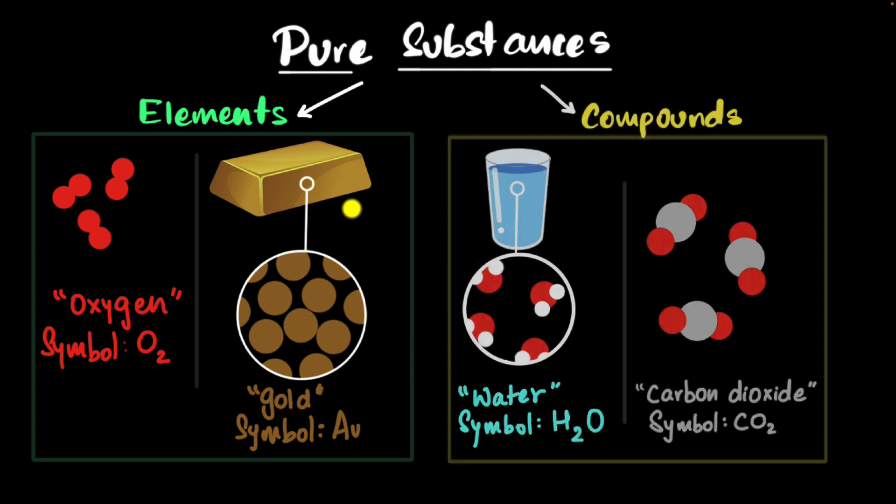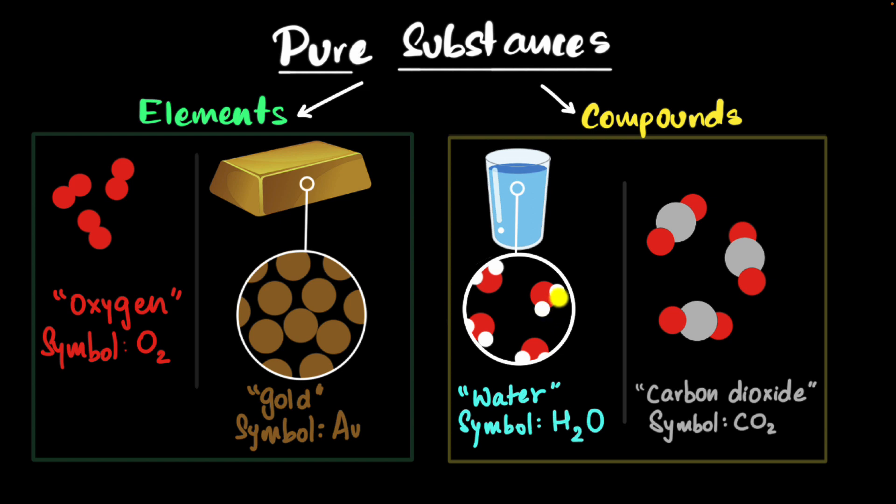Or they can be compounds where two or more atoms are chemically bonded together in fixed ratios. For example, in water molecules, we always have two hydrogens for every one oxygen. We call these pure substances because they're purely made of the same stuff. This is purely made of oxygen. This is purely made of gold. This is purely made of water molecules. This is purely made of carbon dioxide.